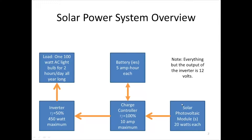We also have our solar photovoltaic modules, which take sunlight from the sun and make electricity. Each module is 20 watts, and we'll need to figure out how many we want. Everything in the system except the output of the inverter is 12 volts DC — from the solar module to the charge controller, from the charge controller to the battery, and from the charge controller to the inverter. The inverter outputs 120 volts AC, just like what you use in your home.